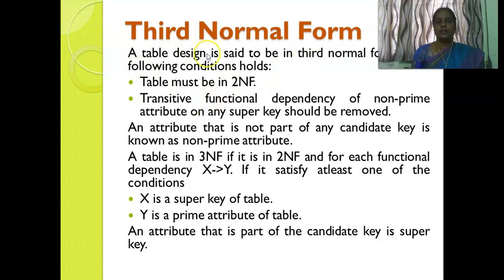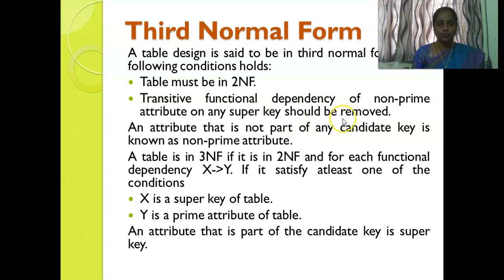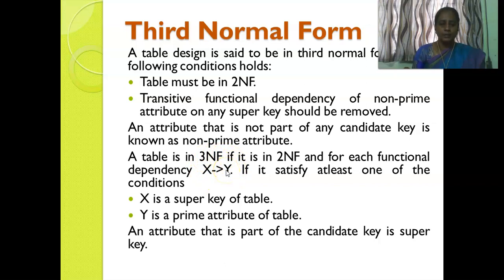Third normal form: a table is said to be in third normal form if it satisfies the following conditions — the table must be in second normal form, and we have to remove the transitive functional dependency. Transitive functional dependency of a non-prime attribute on any super key should be removed. A table is in third normal form if for each functional dependency X determines Y, either X is a super key of the table, or Y is a prime attribute of the table.